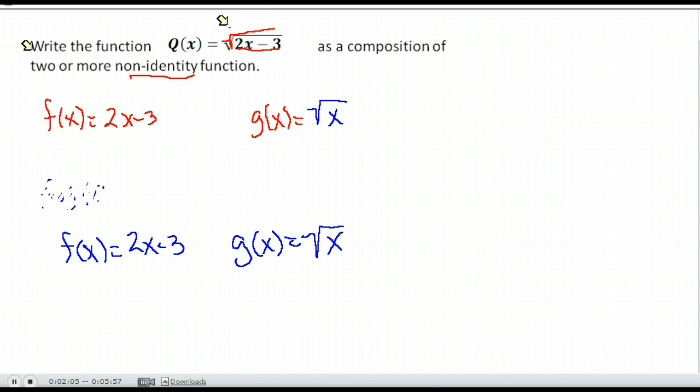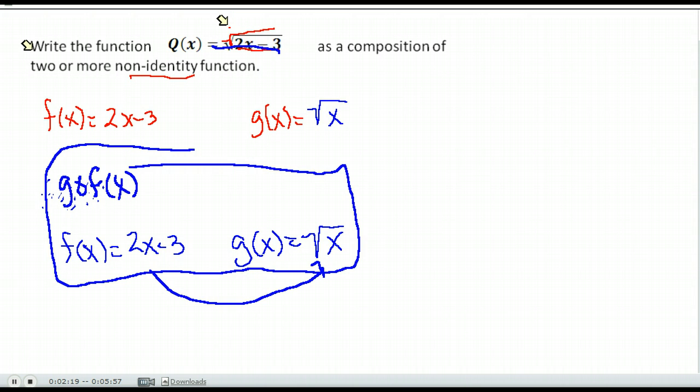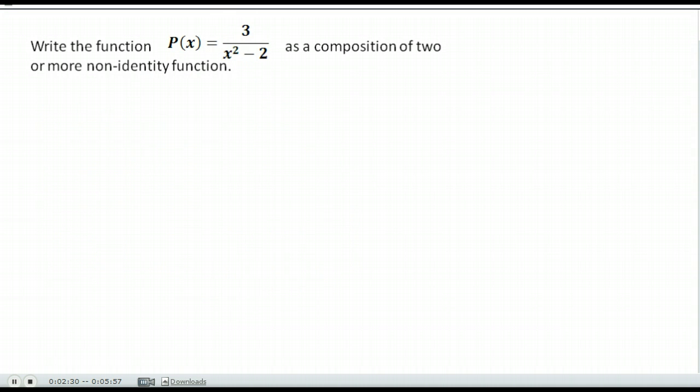If we did the function g of f of x, we would get exactly that. If we took f and plugged it into g, we would get the square root of 2x minus 3. So here is what our answer would look like. We're going to do g of f of x where f of x is 2x minus 3 and g of x is the square root of x.